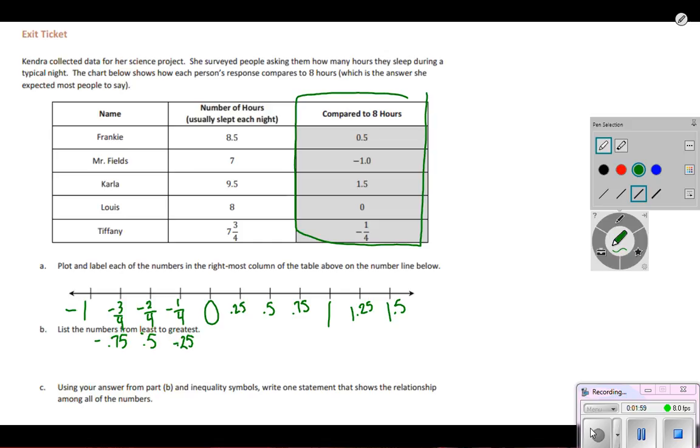All right, so there's my number line. Now I'm going to go ahead and plot that information from the chart onto my number line. So the first one, Frankie, had a 0.5 or 5 tenths of a difference. There's Frankie.